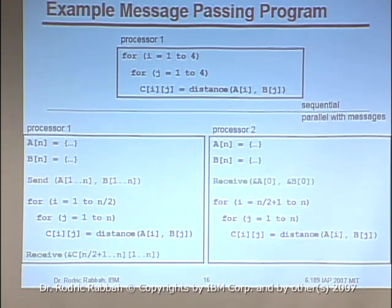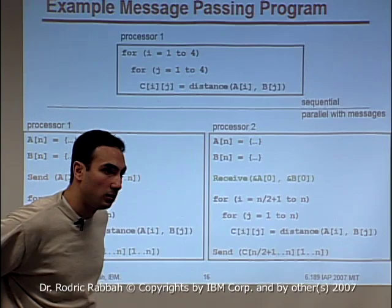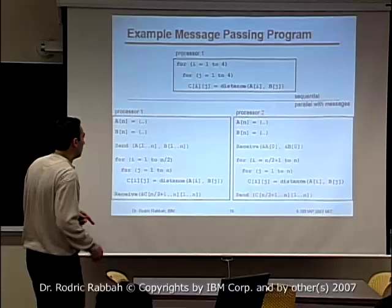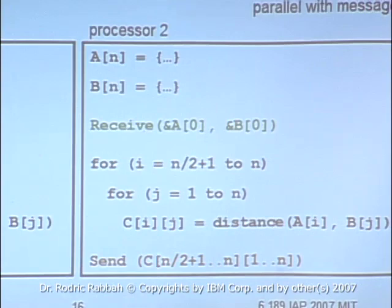Regarding whether processor two has to wait for data — yes. The receive means 'wait until I have data.' Processor one sends the data and can immediately start executing its own code. Processor two waits until the receive completes, then starts executing. There's implicit synchronization that you have to do, and in some cases it's explicit.